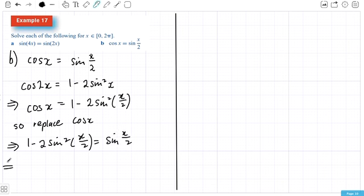And I'm going to put everything onto this side, just because then I can get a nice positive here. So I'm going to have 0 equals sine x over 2 plus 2 sine squared x over 2 take away 1. And just rewriting it so that it's a little bit nice.